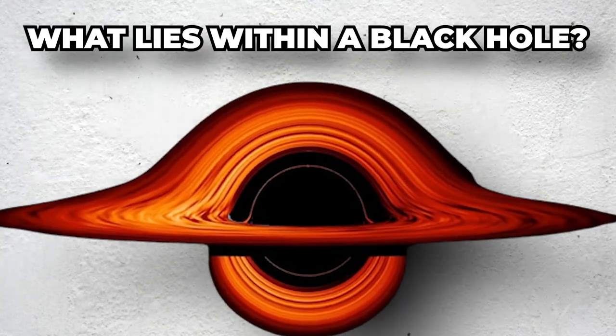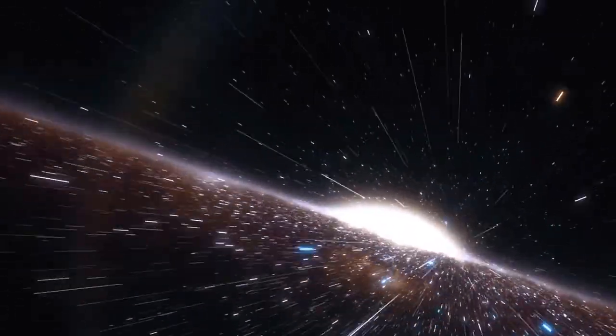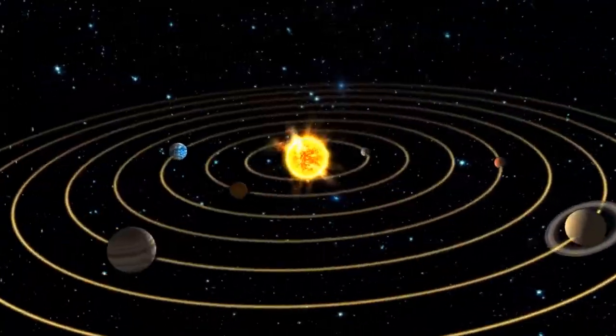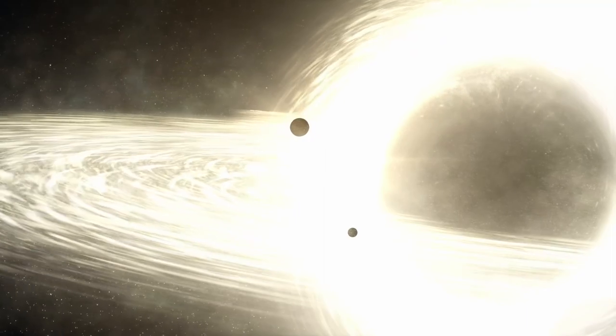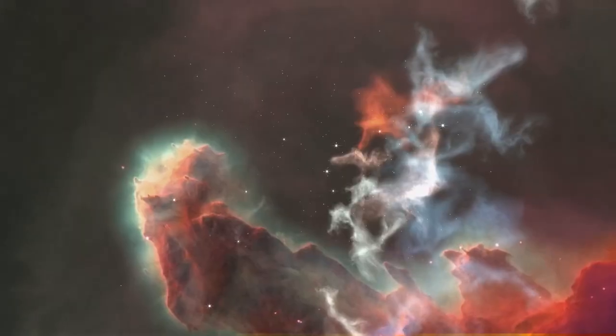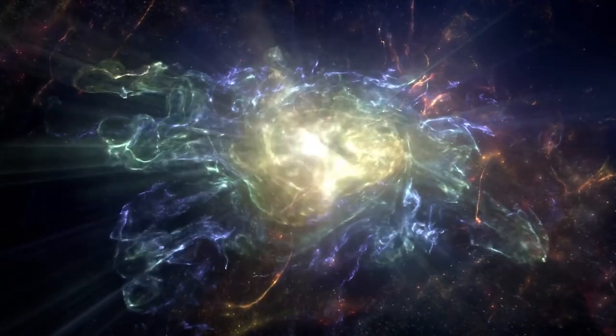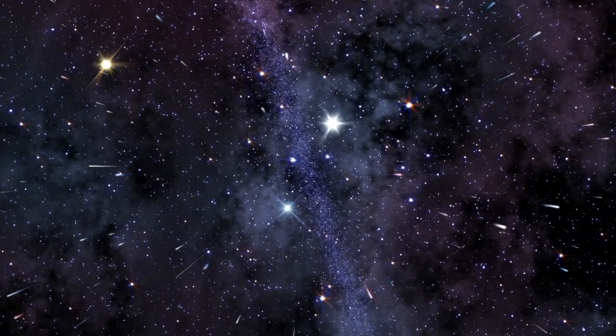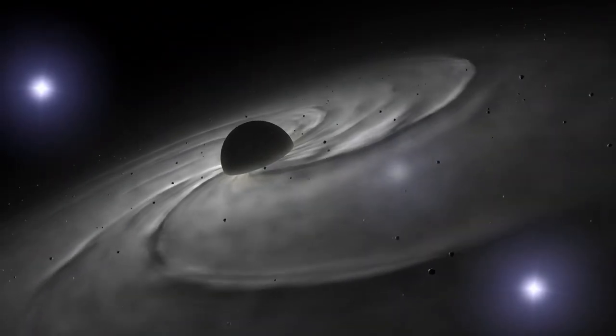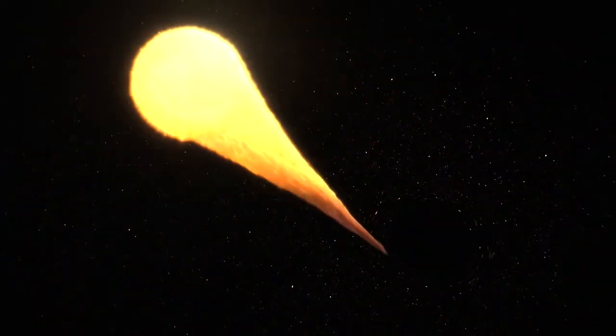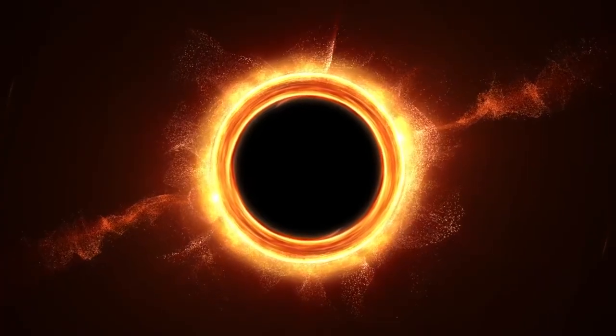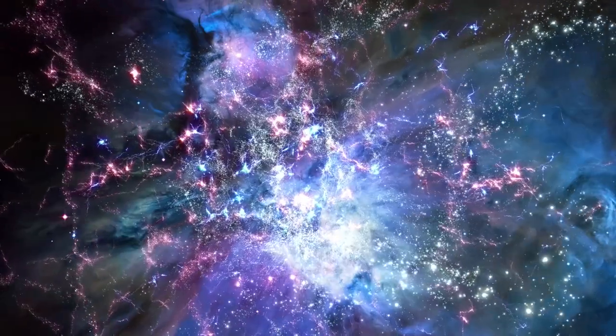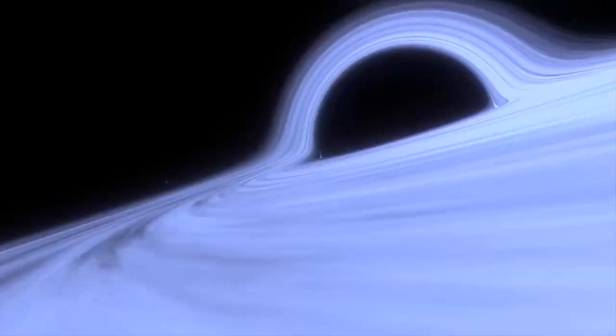What lies within a black hole? We can't see what's inside a black hole because no light or information of any kind can escape. However, astrophysical theories suggest that all of a black hole's mass is concentrated into a tiny point of infinite density at its core. This is referred to as a singularity. The black hole's incredibly strong gravitational field is generated by this point, this singularity.